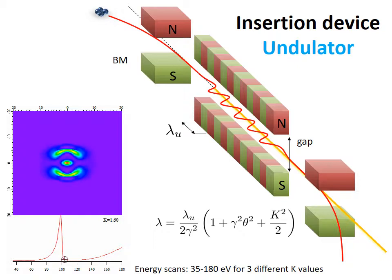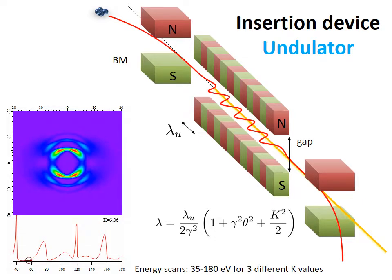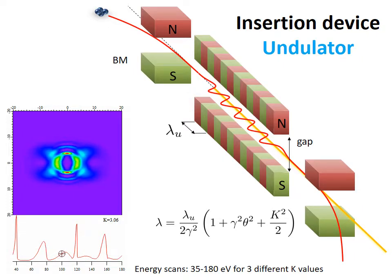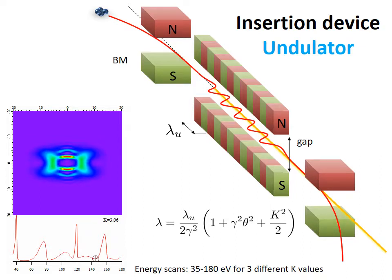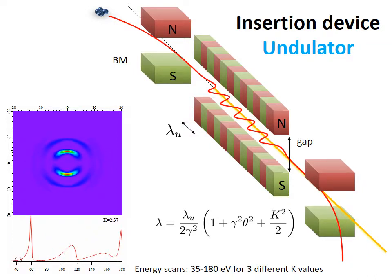As you can see, each harmonic produces strong coherent radiation on axis and changes the energy as the k-parameter changes. The undulator is also used for free-electron lasers as a 4th generation light source. When the energy of the electron increases, gamma increases, and then the undulator produces coherent X-rays.